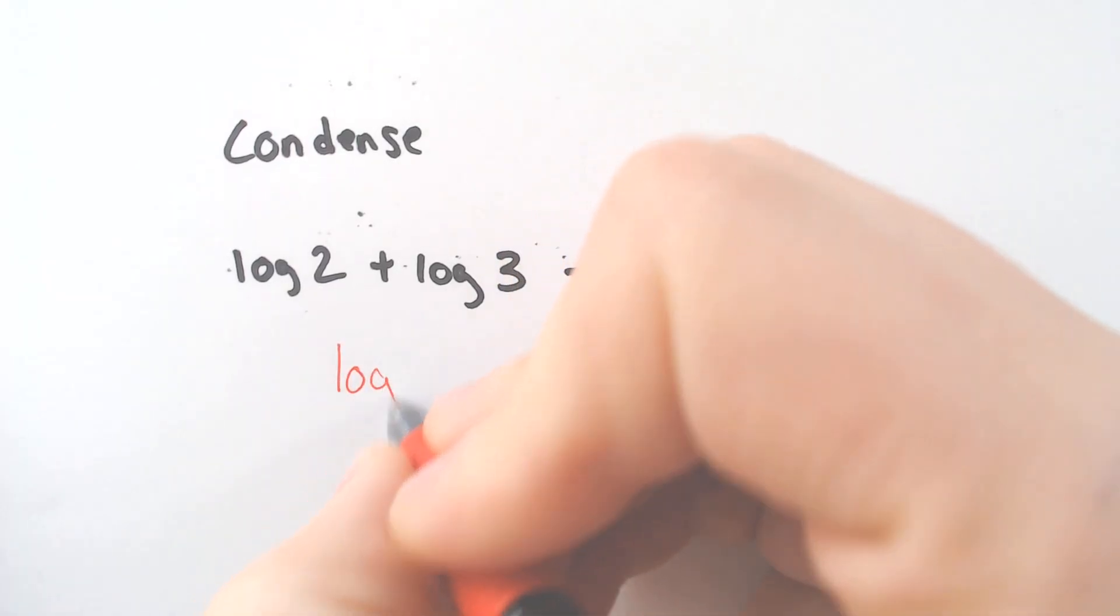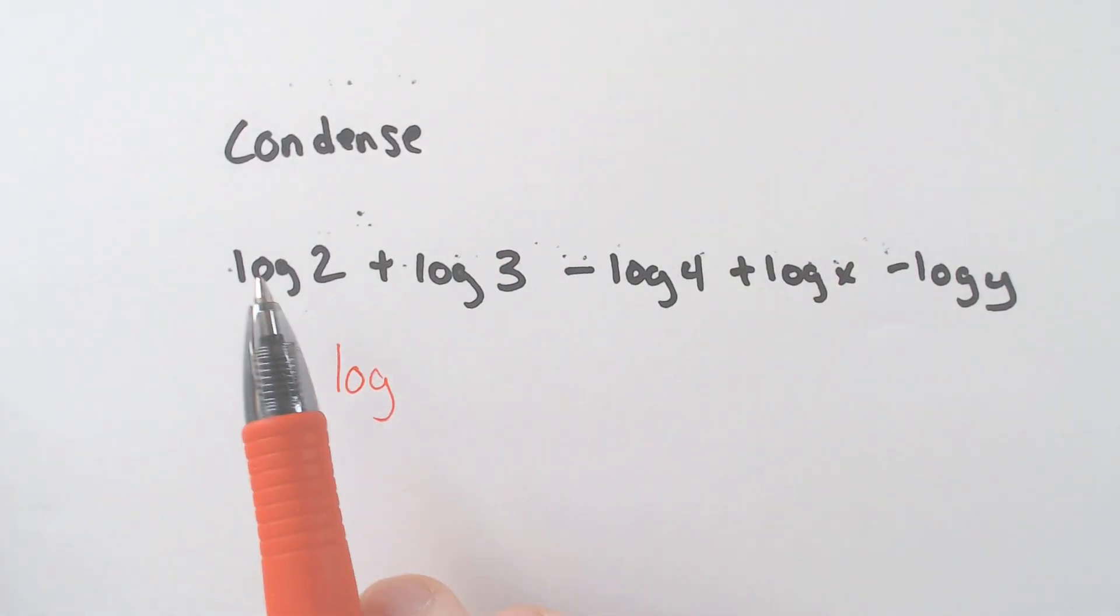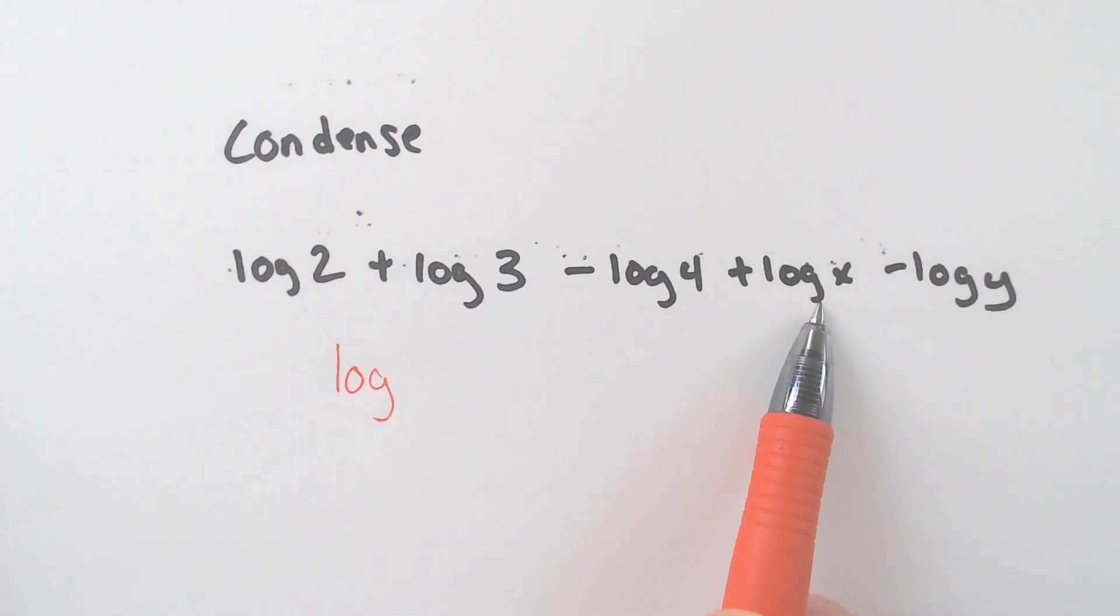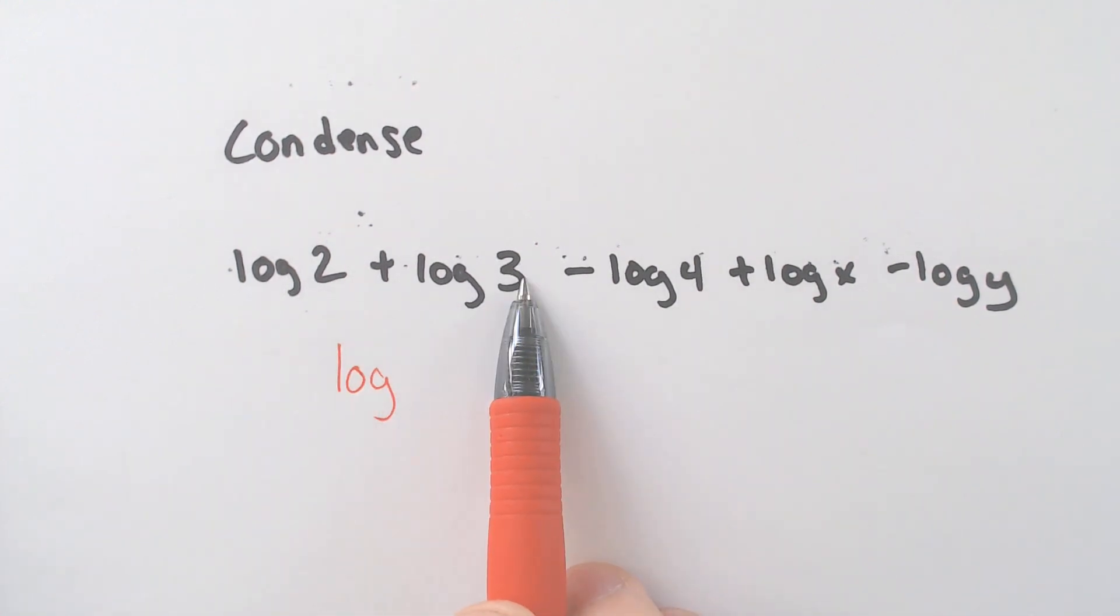So we are going to end up multiplying everything that had a plus sign. So that would be multiplying 2 and 3 and x. Well, if we multiply 2 times 3, you get 6. And then multiply with an x, you end up with just 6x on the top of the fraction.